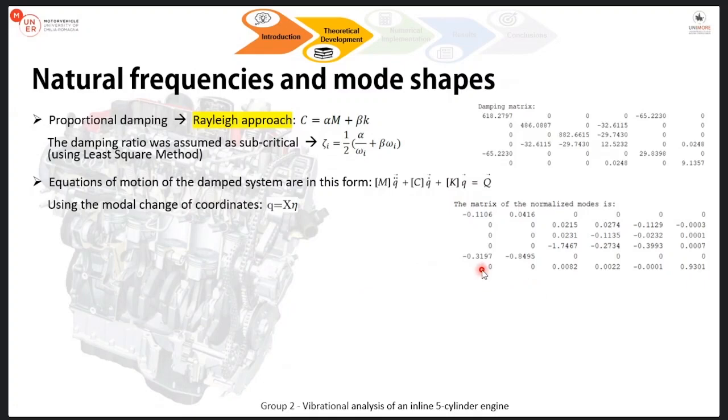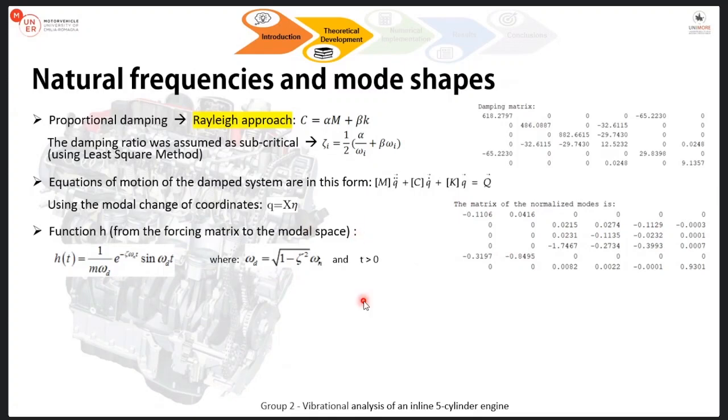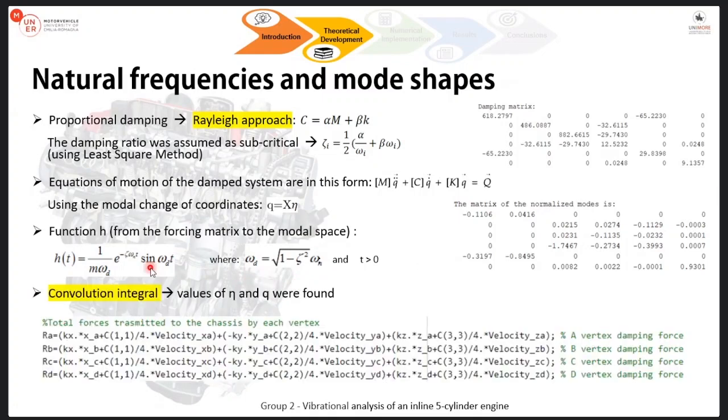The one displayed before, it was the matrix of mode shapes, not normalized. This version here is finally normalized. After that, we had six equations of one degree of freedom system. Each of them can be solved using the convolution integral. We did that using MATLAB, using the CONV function, C, O, N, V function. Thanks to that, thanks to the convolution integral, we found the value of zeta, the model coordinates. From zeta to q, we passed from frequency to time domain. We finally got the solution of the equations of motion.